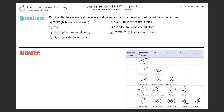Number 85: identify the electron pair geometry and the molecular structure of each of the following molecules, parts A through G. We've done plenty of questions like this already. Electron pair geometry and molecular structure come from Lewis structures. If you're not comfortable with Lewis structures, go back to question 40 in this chapter where I go into depth on how to draw the perfect Lewis structure.